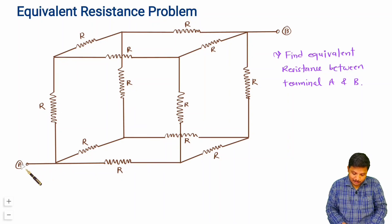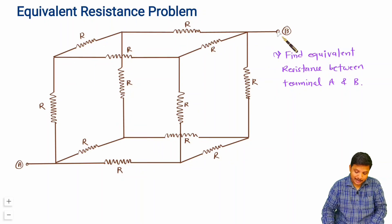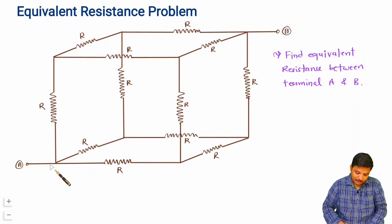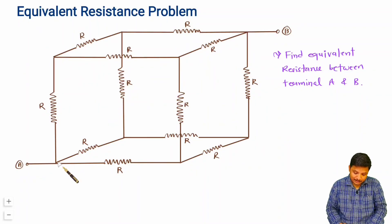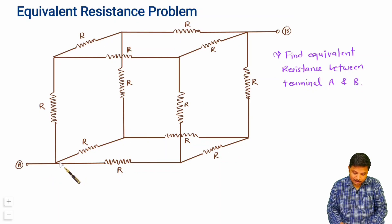When you connect two terminals at the diagonal of the cube, the network will be symmetric with respect to the line connected between A and B. Because the network is symmetric and all resistors have equal values, whatever current enters will get distributed uniformly.